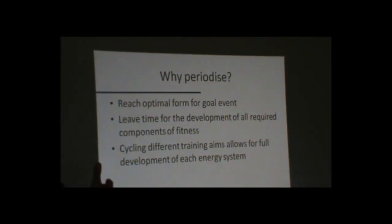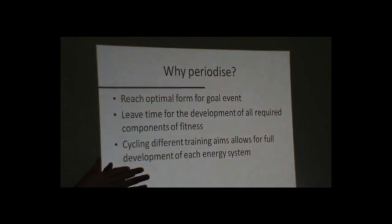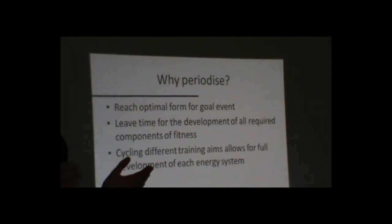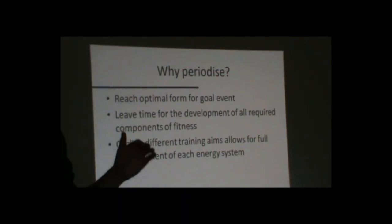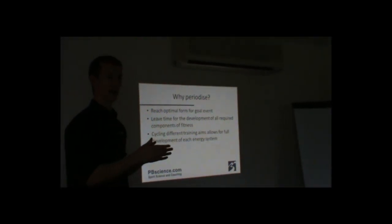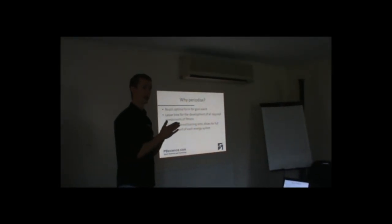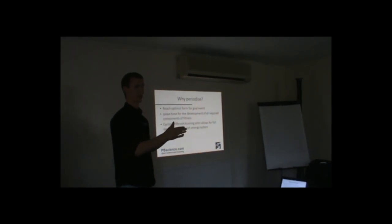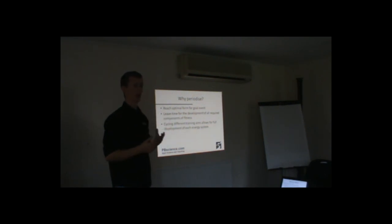By cycling the training phases, you can have a specific stimulus on each energy system. Once you get to a reasonable training level — which you're all at in this room — you really need to target each aspect. If you've got 12 hours a week to train, in order to get the adaptation you need on a specific energy system, you might need to devote that whole 12 hours to training in that area just to lift it up. By doing 12 hours a week focused on building your endurance, it ensures you really get the stimulus you need to improve it.